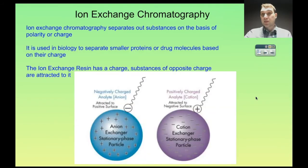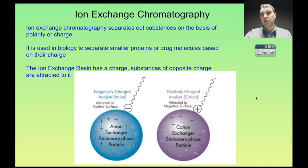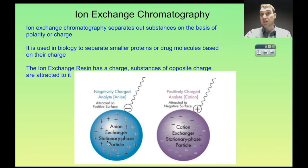The basis of ion exchange chromatography is the same as other chromatography — we're separating out substances based on the structure of the molecules. But in this case we're focusing on charge specifically, mainly ionic charges and also some level of polarity. The way it works is you have a column that contains an ion exchange resin, and that resin can have a positive or a negative charge. It will attract substances of the opposite charge to it.